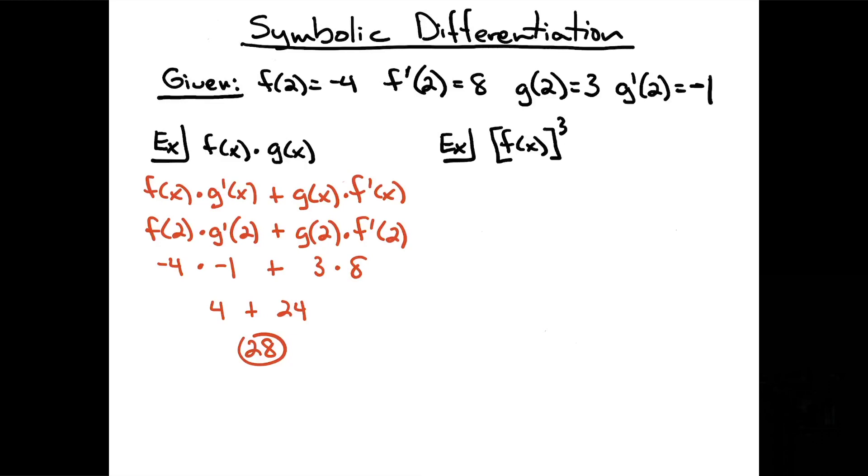In the second example, I've got f of x raised to the third power. This is going to indicate a chain rule. The outside function is something being raised to the third power. The inside function is that f function.